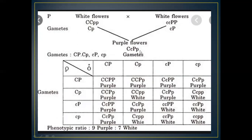If we self the F1 generation, these are the possible gametes, and this is a Punnett square. In the Punnett square, the vertical side represents the female gametes and the horizontal side represents the male gametes. There would be the same types of gametes in both male and female, and these are the various genotype combinations we get from crossing them.